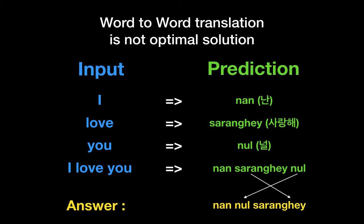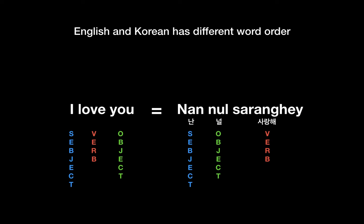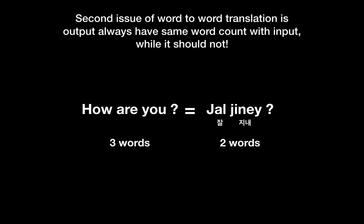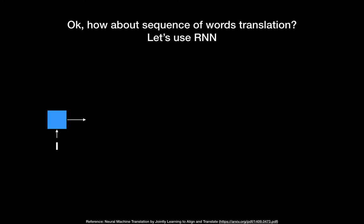But word-to-word translation is not perfect. The correct answer is 'nan nul saranghae,' while a direct translation gives 'nan saranghae nul' — the word order has changed. English is an SVO language while Korean is SOV. A second issue is that word-to-word translation always produces the same word count as the input, but it shouldn't. For example, 'how are you' in English is only two words in Korean, so this approach is not suitable for machine translation.